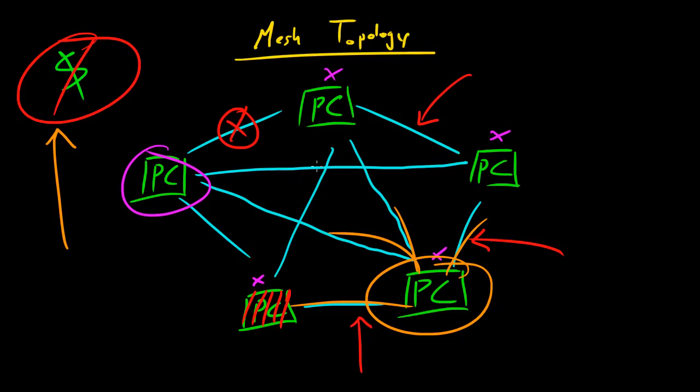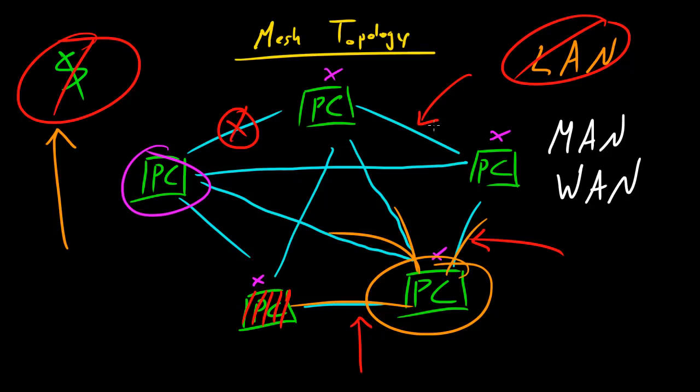Overall I would say that typically in your home network, this usually isn't in LANs at all because it's very complicated. You're going to often see this in either MAN or WAN, because this is really good for big fiber optic networks because they can all communicate to each other.